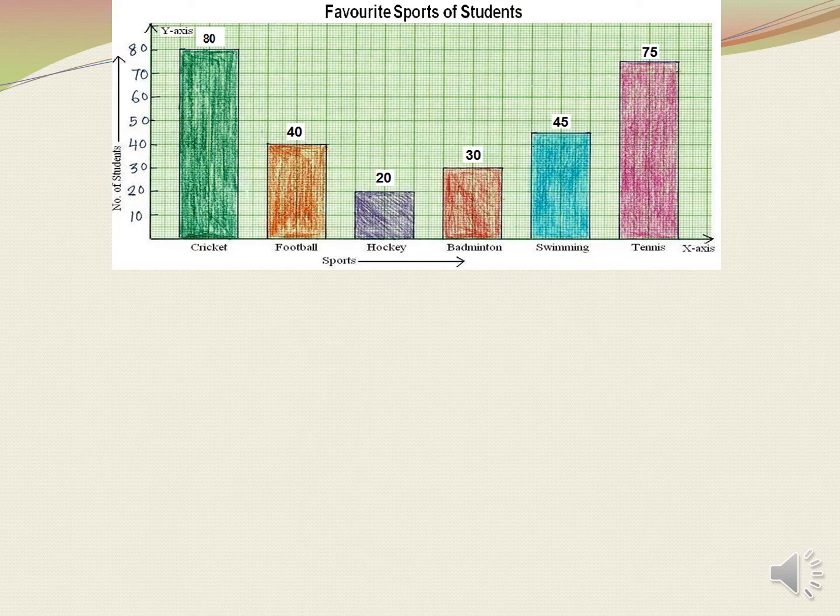To understand bar graphs better, let's do some questions. This is your first bar graph. You can see the title on top — that is, favourite sports of students. On x-axis you can see the names of the sports: cricket, football, hockey, badminton, swimming, tennis.